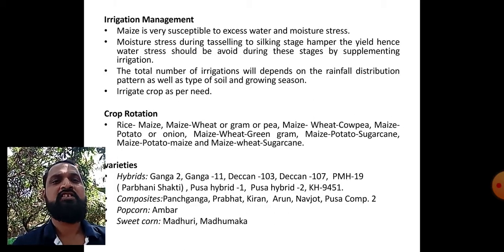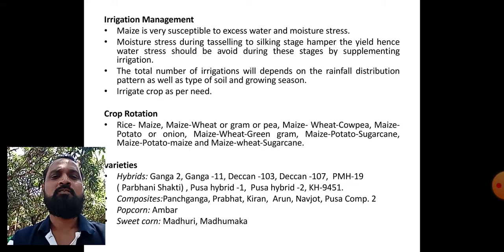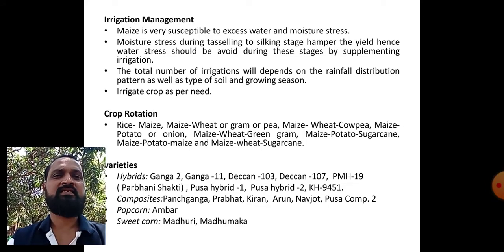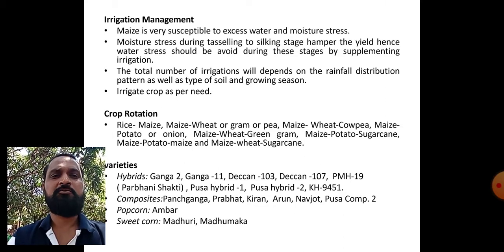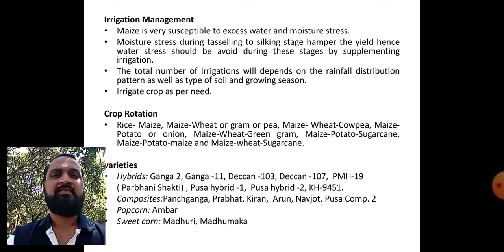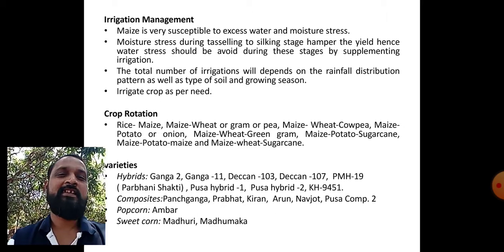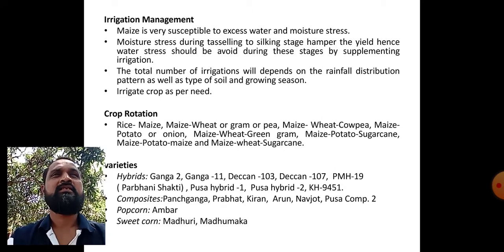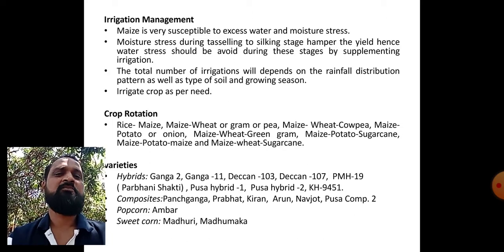Irrigation management: maize is susceptible to excess water and moisture stress. Moisture stress during tasseling to silking stage hampers the yield; hence water stress should be avoided during these stages by supplementing life-saving irrigation. The total number of irrigations depends on rainfall distribution pattern, type of soil, and growing season. Generally five to six irrigations are required for this crop.